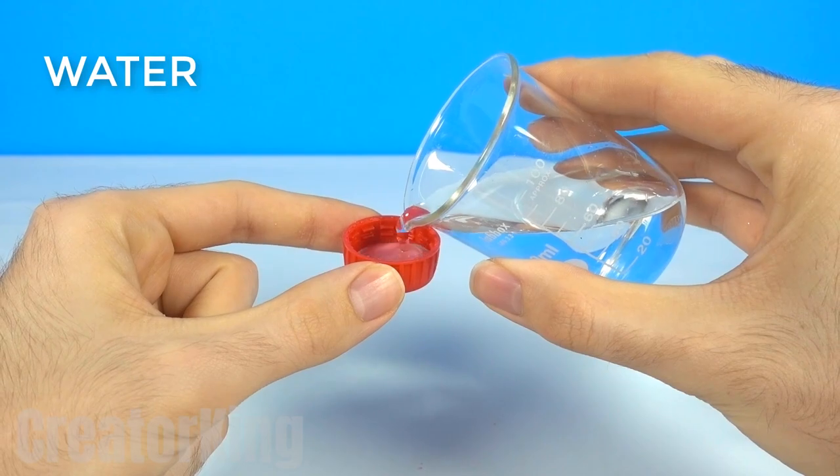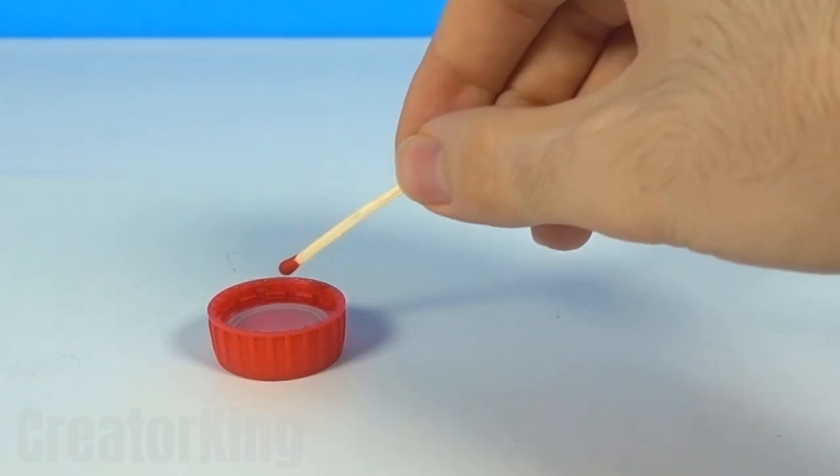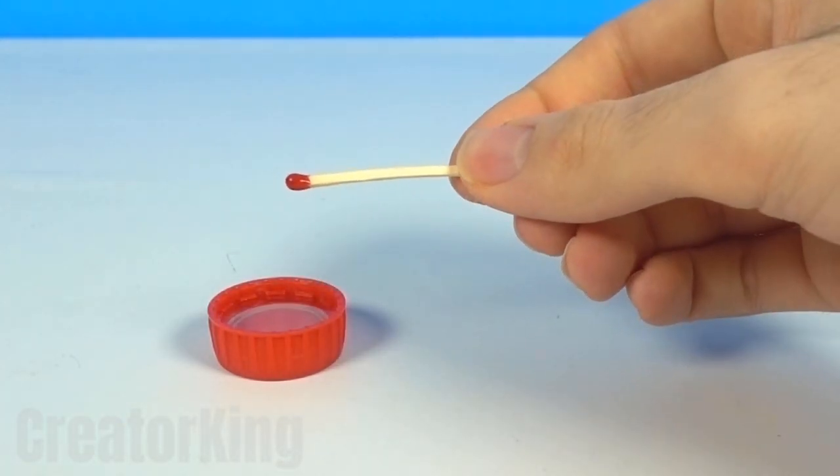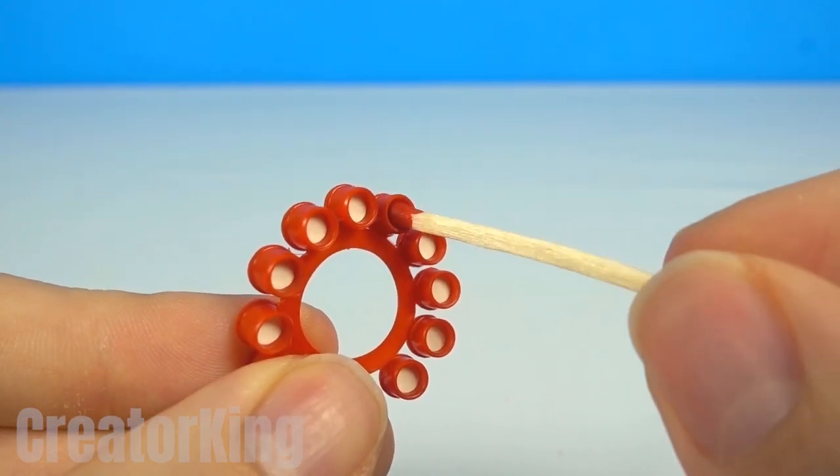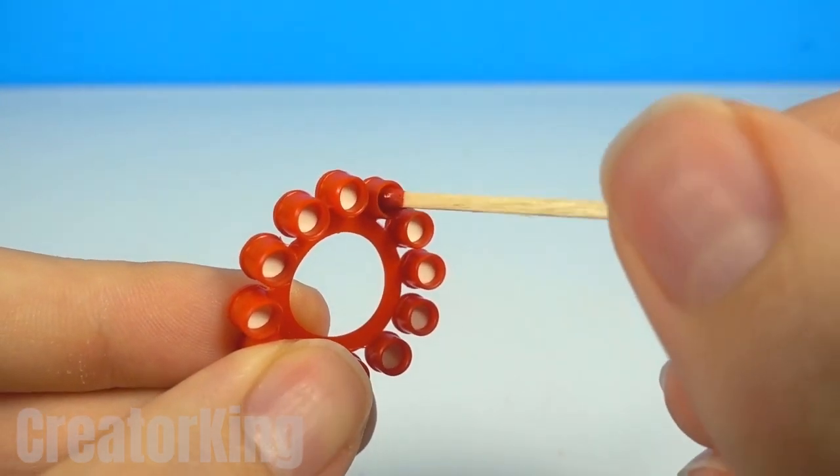Fill up a lid or something with water and dunk the matches in it. Then rub it with the gunpowder mix carefully. We'll make several to have in reserve.